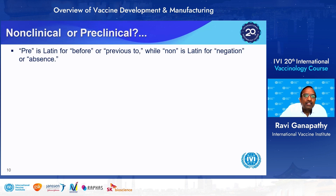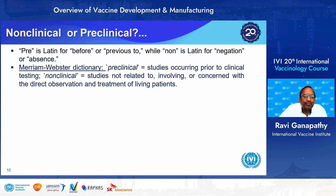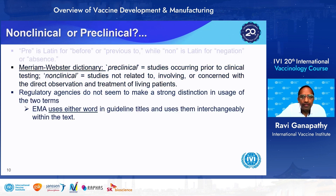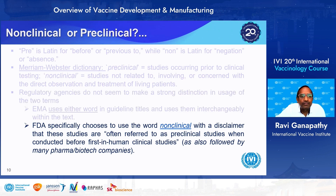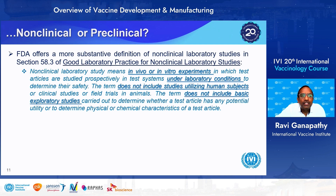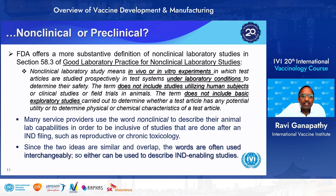Coming to non-clinical or preclinical studies — these terms are used interchangeably. Preclinical refers to studies occurring prior to clinical testing, and non-clinical refers to studies not involving direct observation and treatment of living patients. Regulatory agencies do not make a strong distinction. FDA specifically chooses to use 'non-clinical' with a disclaimer that these studies are often referred to as preclinical when conducted before first-in-human clinical studies. FDA gives a more nuanced definition in section 58.3 of GLP: non-clinical study means in vivo or in vitro experiments under laboratory conditions, excluding studies utilizing human subjects or basic exploratory studies.